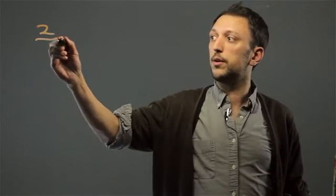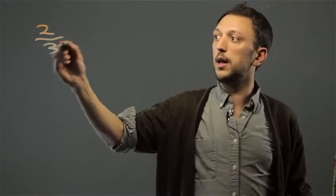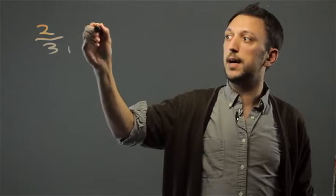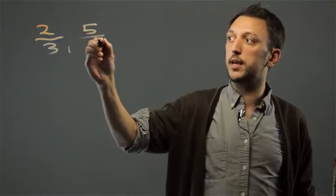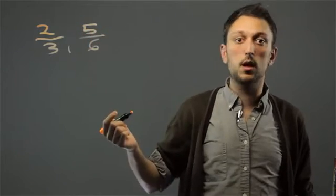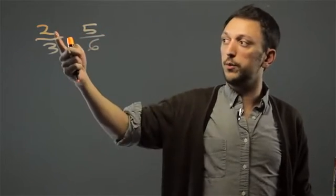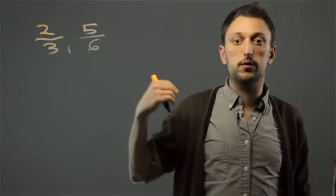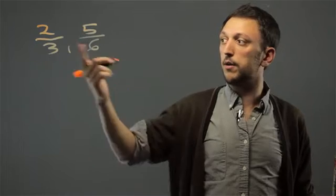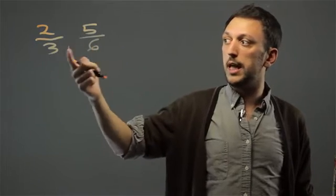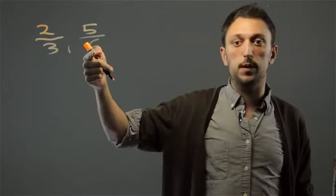So let's say we have two fractions: 2 thirds and 5 sixths. What we want to do is find the lowest common denominator for both of them. In this case, that will be 6.